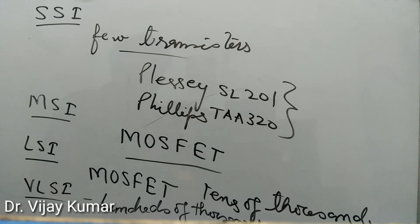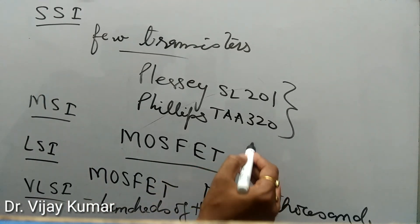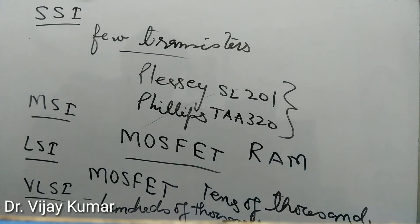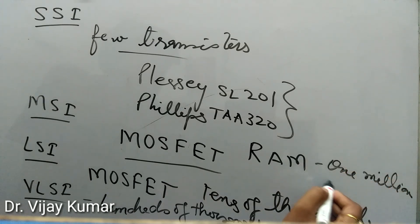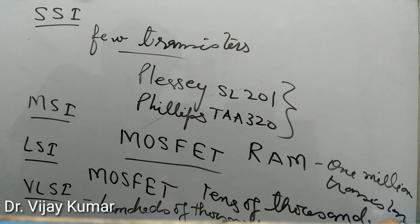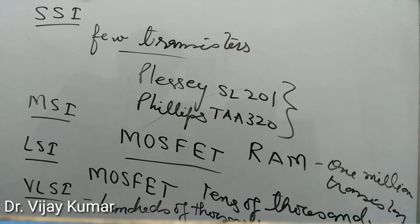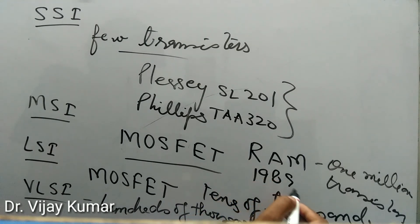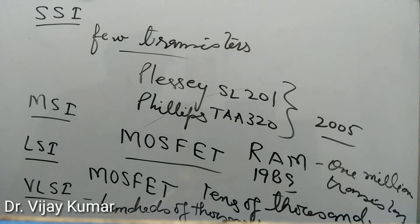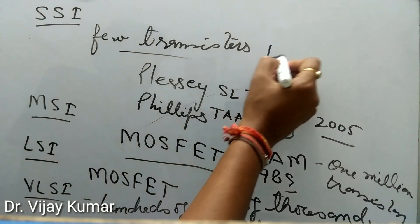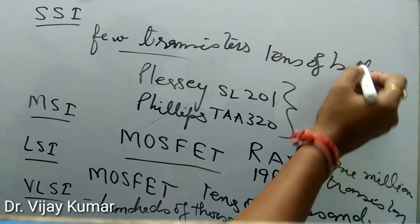As of 2016, transistor counts continued to grow beyond 10 billion transistors per chip. In 1986, the first 1-megabyte RAM chips were introduced, containing more than 1 million transistors. Microprocessor chips passed the 1 million transistor mark in 1989 and the 1 billion transistor mark in 2005. After 2005, the trend continued, with chips introduced in 2007 containing tens of billions of transistors.